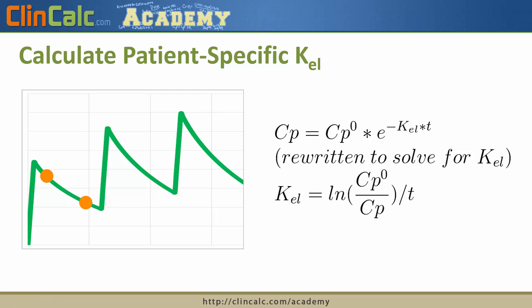Using those two drug levels, the next step is to use this equation, which is the half-life equation, to determine a patient-specific elimination constant, or KEL. And if you rewrite that equation, you can solve for KEL.